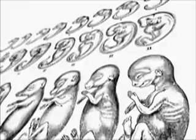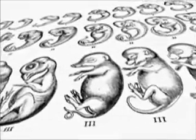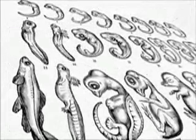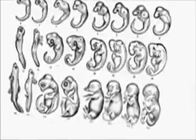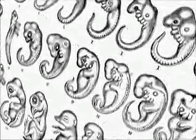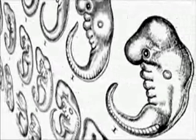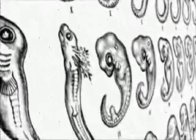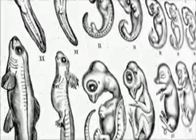Haeckel was a German biologist and artist, a contemporary of Darwin's, who made famous drawings of vertebrate embryos — fish, humans, salamanders, chicks, turtles, and so on. In those drawings, Haeckel tried to show that all these different vertebrates look very much the same as early embryos, with early similarities suggesting they came from a common ancestor, and differences arising only later.